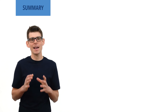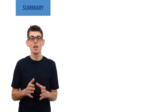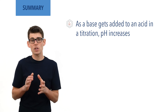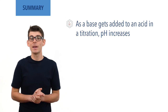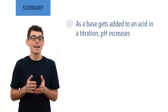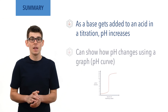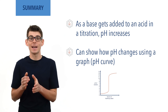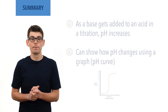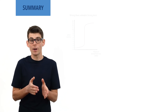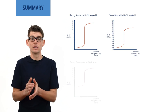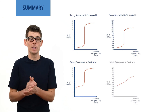So to summarize: as a base gets added to an acid in a titration, the pH of the solution increases. The change in pH is based on the amount of base added and can be shown on a graph. There are four standard shapes for pH curves where a base is being added to an acid in a titration: strong acid and strong base, strong acid and weak base, weak acid and strong base, and weak acid and weak base.